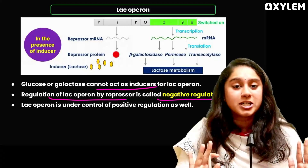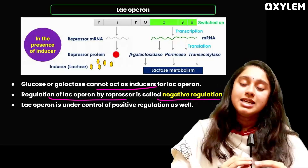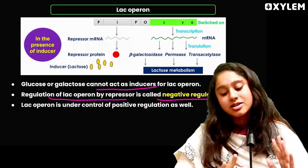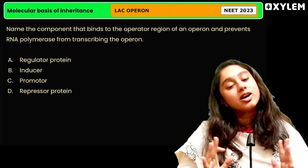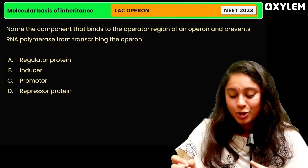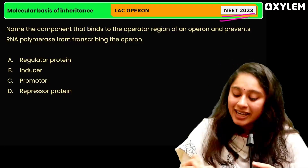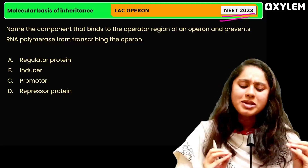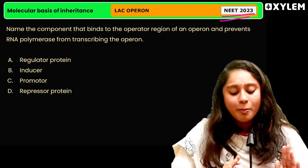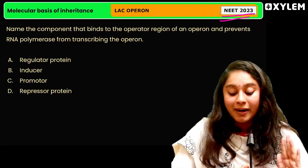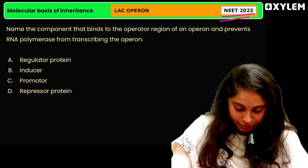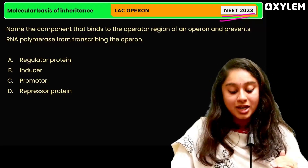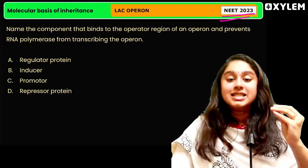If you have understood all of these things, it will be easy to solve any question. Here I have a very important PYQ for you — from NEET 2023. Name the component that will bind to the operator region of an operon and prevent RNA polymerase from transcribing.